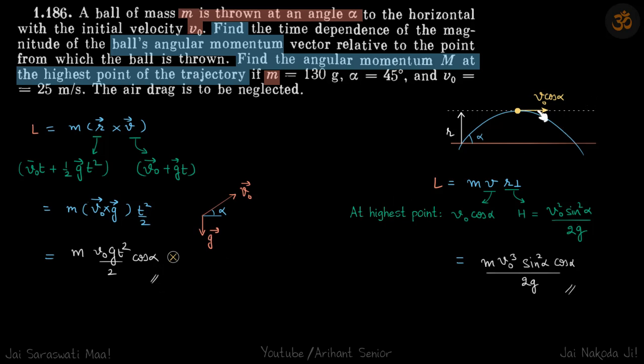And our answer in second part, at highest point of the trajectory what is the angular momentum? So we know the height so we'll directly do m v r. So that will be m into v into r perpendicular.